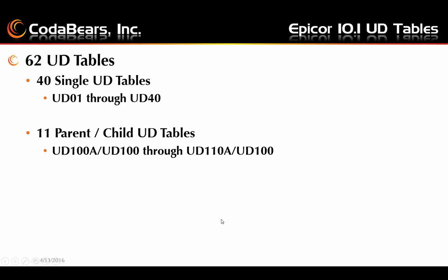In Epicor 10.1, there are 62 UD tables. This can also be said for Epicor 10 and Epicor 9, though I'm not entirely certain about all of Epicor 9. There are 40 single UD tables, UD01 through UD40, and there are 11 parent-child UD tables.